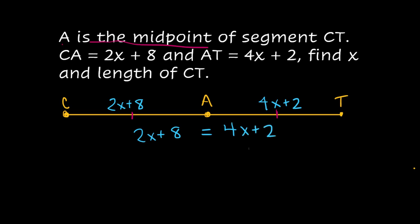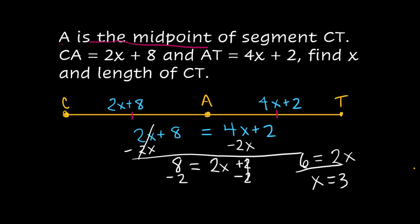Let's start solving. Let's take 2X away from both sides. That's going to cancel and we're left with 8 equals, well, 4X minus 2X is 2X plus 2. Now we'll subtract that 2 from both sides and we are going to be left with 8 minus 2 is 6 and that equals 2X. So our X equals 3 and that was one of the things we were supposed to find. X equals 3.